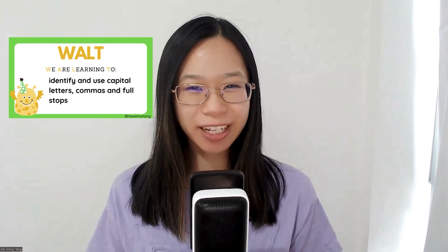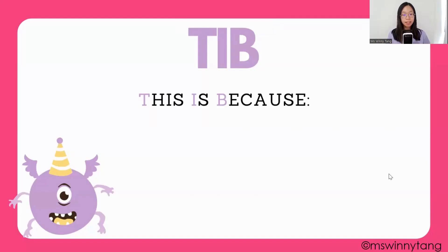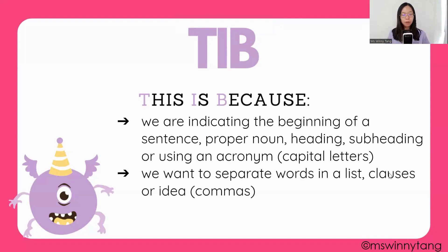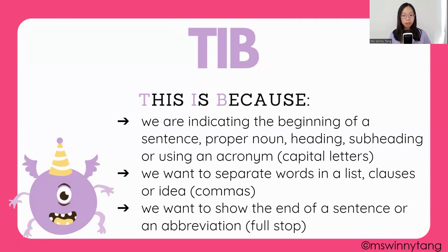Today we are learning to identify and use capital letters, commas and full stops. When we're using capital letters, we are trying to indicate the beginning of a sentence, or we might be using a proper noun, a heading, a subheading, or an acronym. For commas, we're wanting to separate the words in a list, clauses, or some ideas. With a full stop, we want to show the end of a sentence or we're using it for an abbreviation.